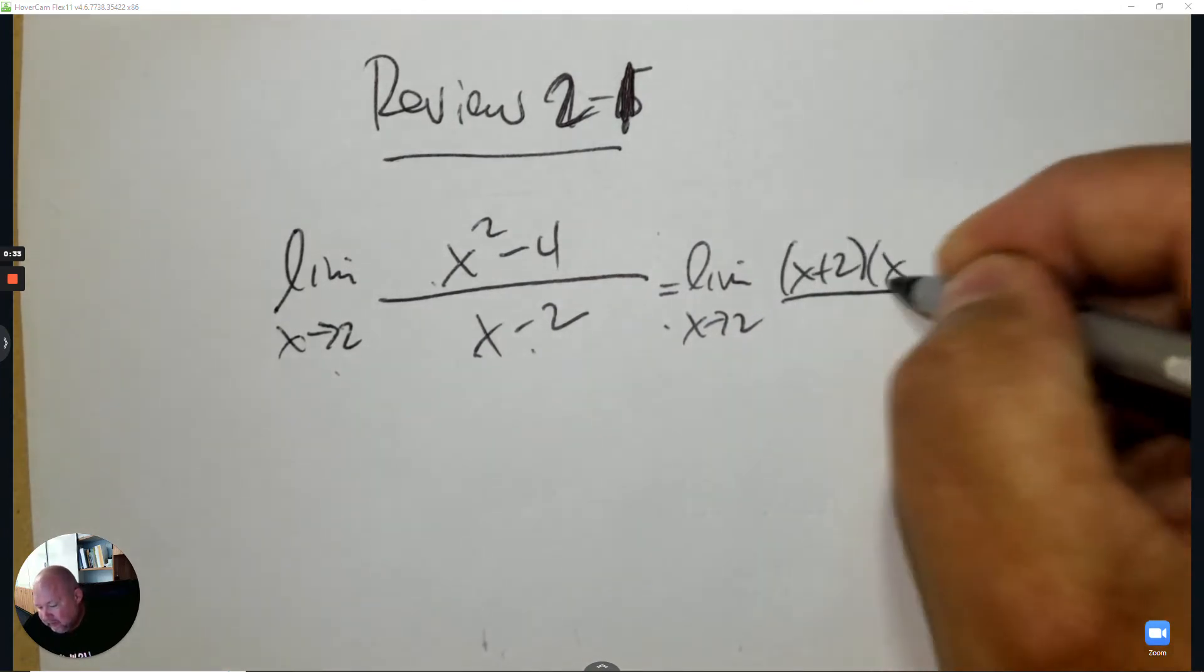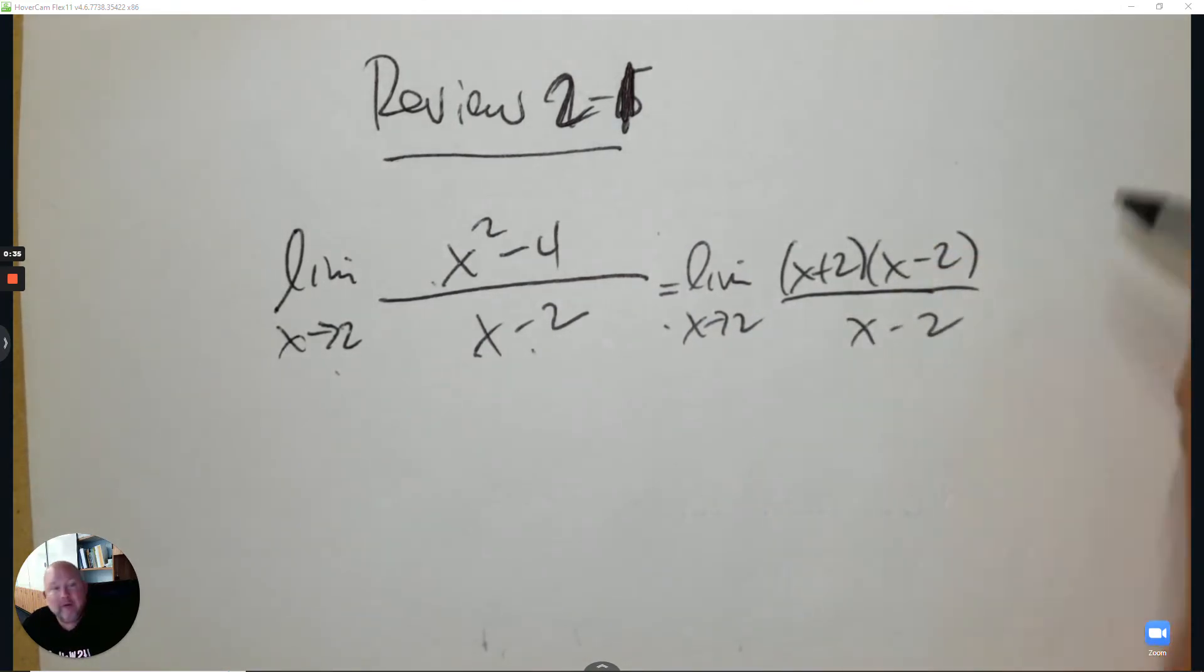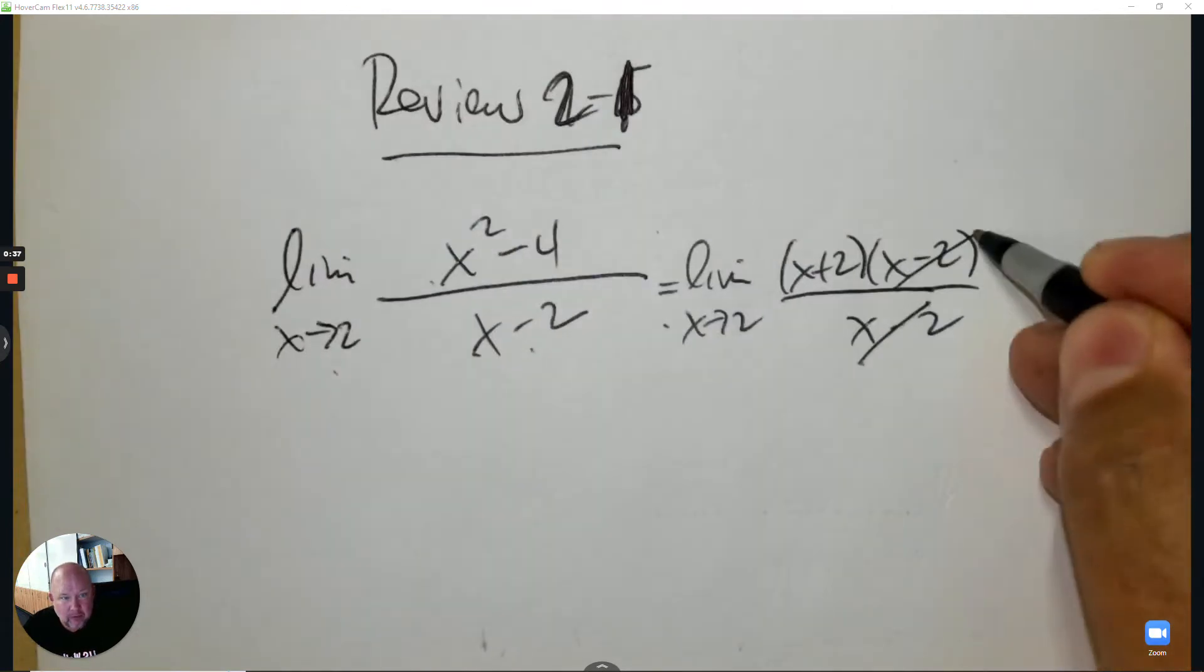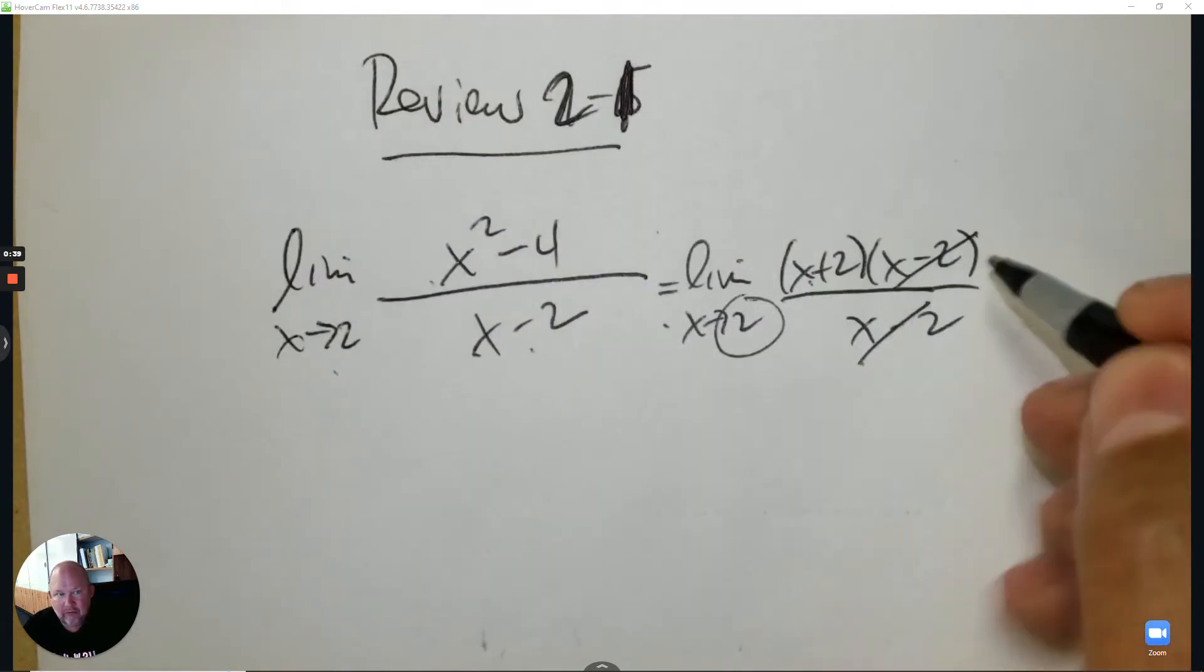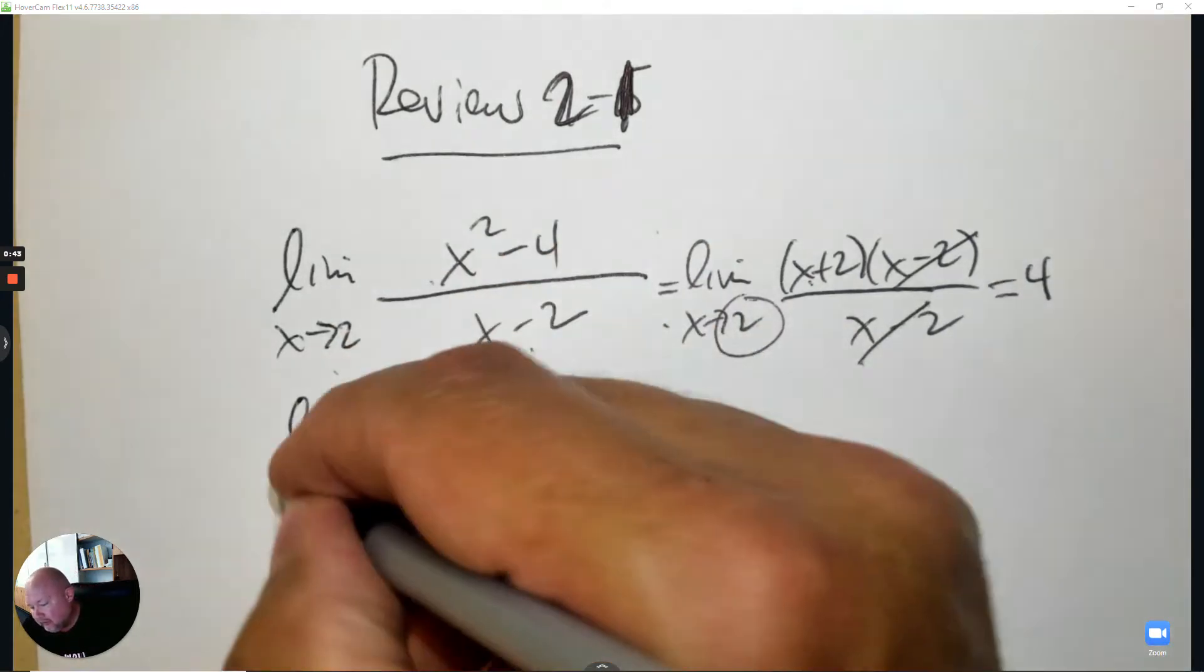You can do a difference of squares, and then this removes. You plug in and get your answer. Let's do some examples that look like that.